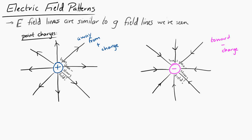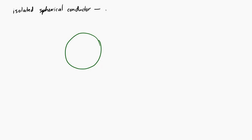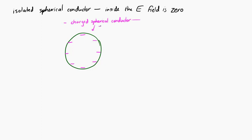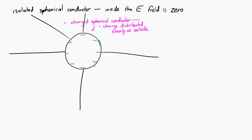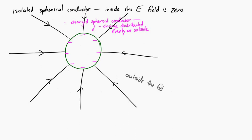If we have an isolated spherical conductor, the electric field inside of it is zero. For a negatively charged spherical conductor, the negative charge is distributed evenly on the outside, and outside the conductor the electric field looks similar to that of a point charge. But inside that spherical conductor the electric field is zero — the same idea applies to a positively charged spherical conductor.